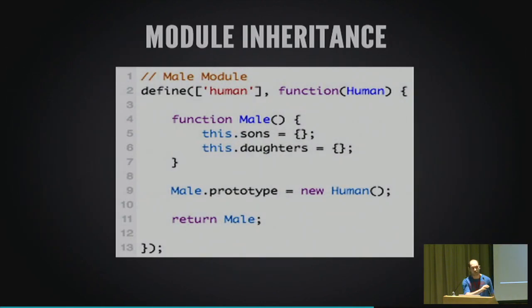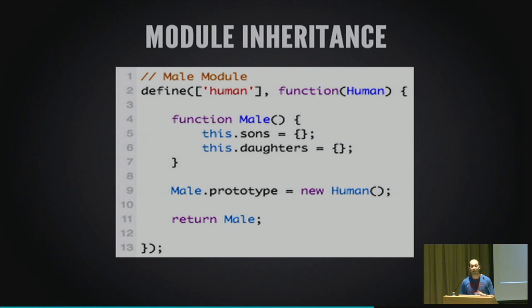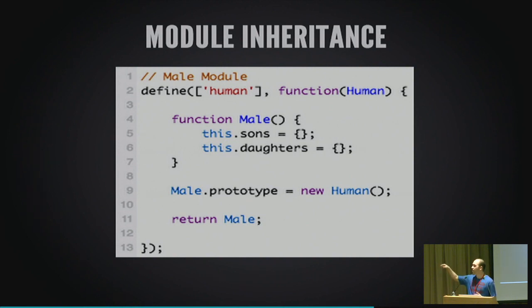RequireJS also supports inheritance. JavaScript's prototypal inheritance isn't lost with modules. For example, a `human` module with name and date of birth can be extended with a `male` module that adds sons and daughters, returning the male object. When you include the male module elsewhere, it already extends from human through prototypal inheritance — you don't need to separately include both human and male wherever you use male.